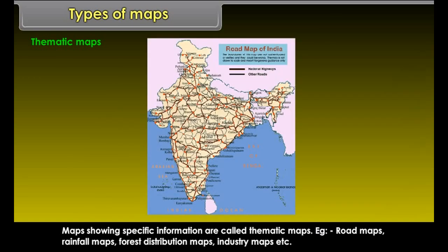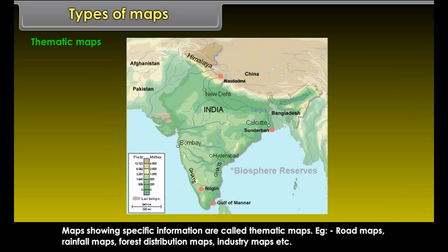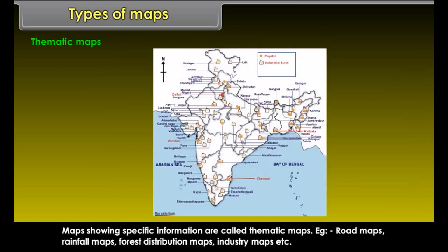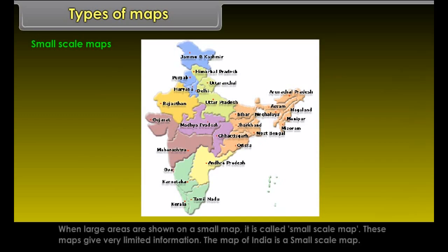Thematic Maps. Maps showing specific information are called thematic maps. Examples include Road Maps, Rainfall Maps, Forest Distribution Maps, Industry Maps, etc.